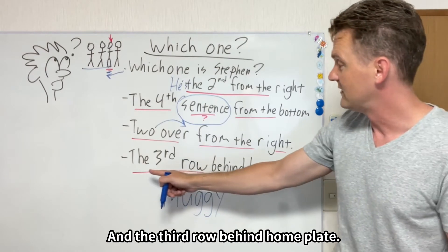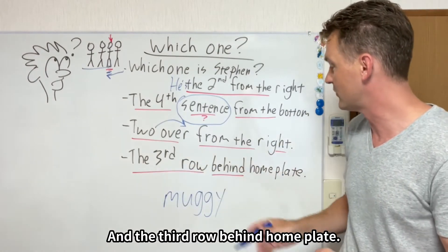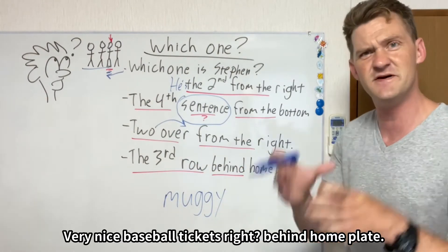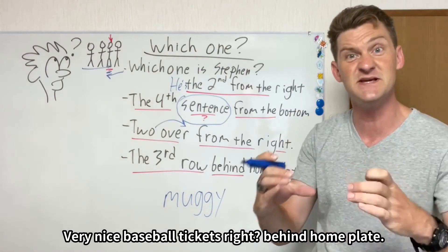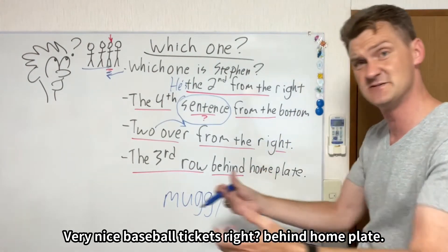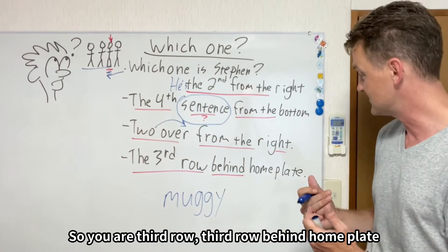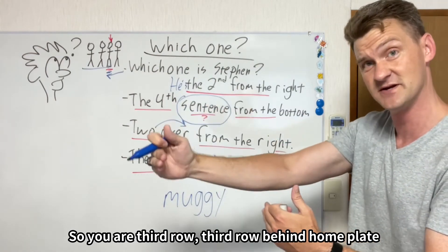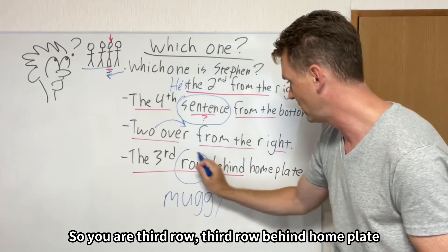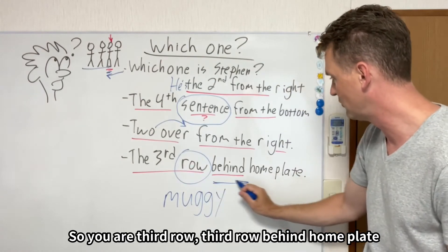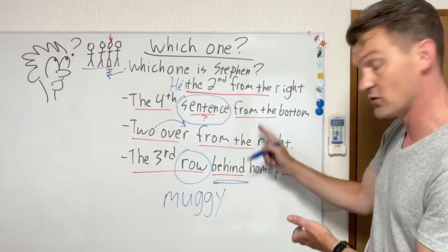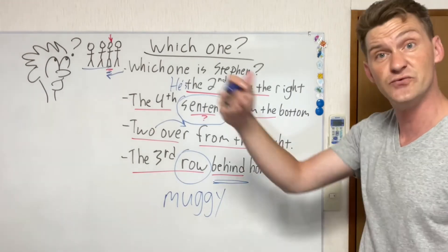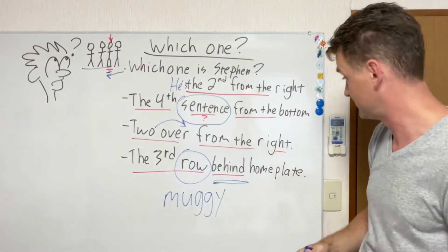And the third row behind home plate — you have very nice baseball tickets, right behind home plate. So you are in the third row. 列は3番目列. Third row behind home plate. You can also use: bottom, behind, in front — いろいろできる.